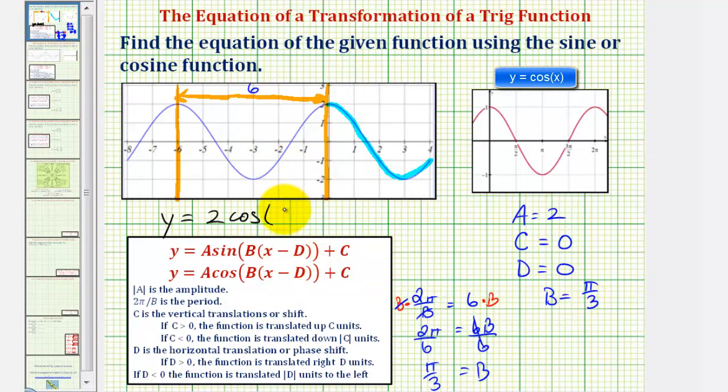Well we know b is pi over three, but since d equals zero, we would just have pi over three times x, and then c is also zero, so this would be the equation of the given function graphed here in blue.